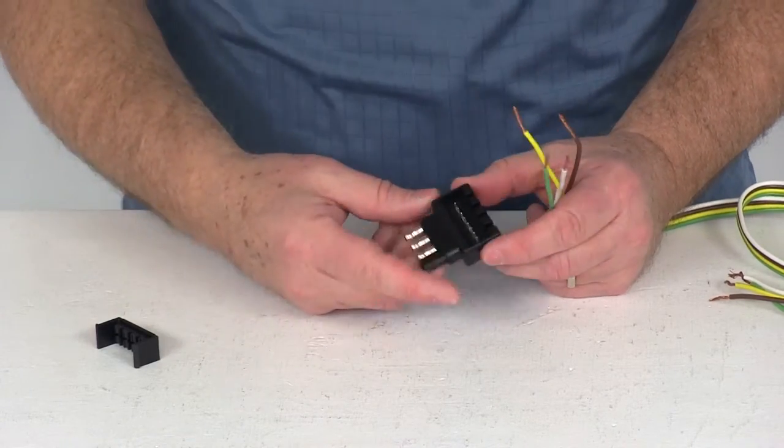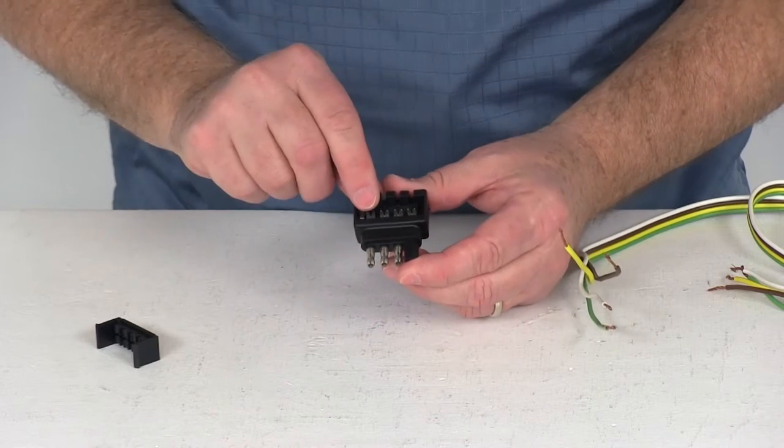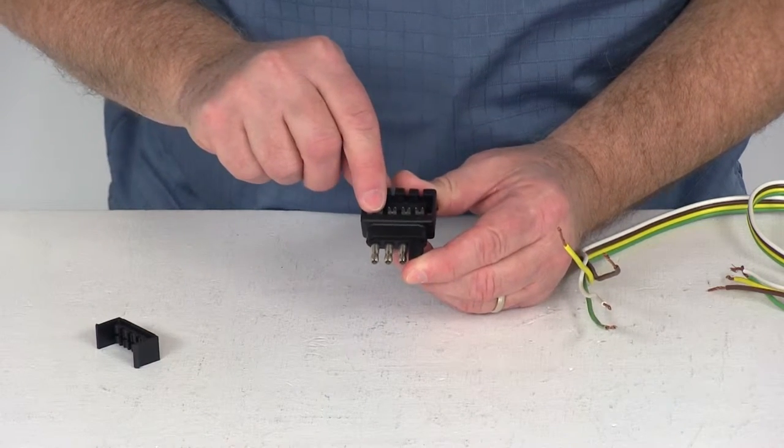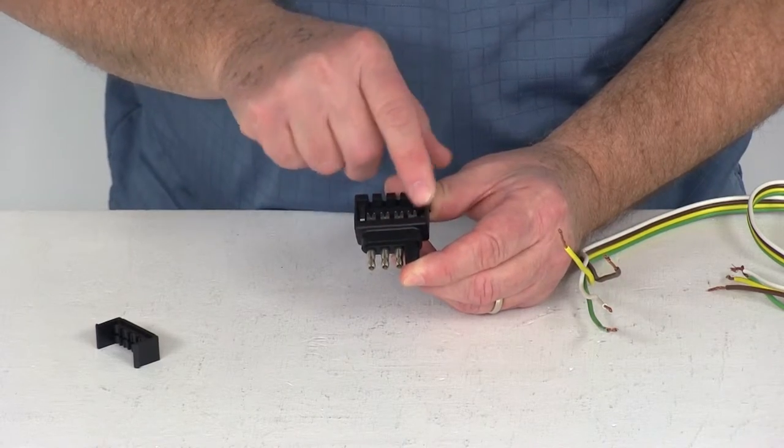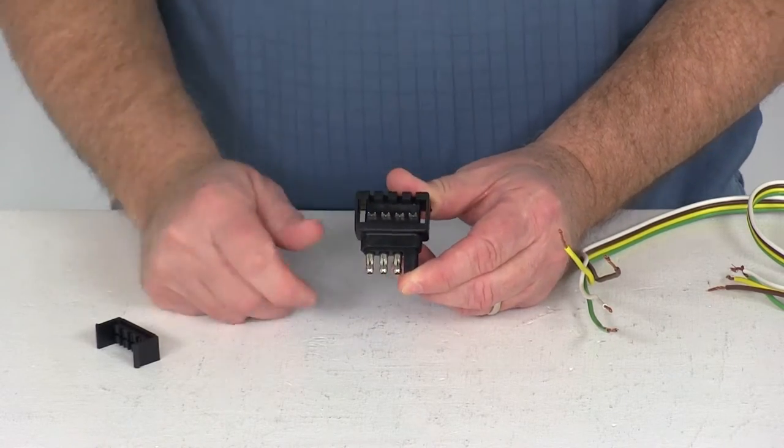What also helps you out is on this 4-Way, it's actually marked. It says RT for right turn, LT for left turn, TM for the taillights and then GD for ground. So it shows you where the wires go.